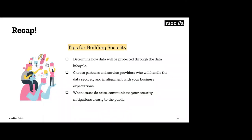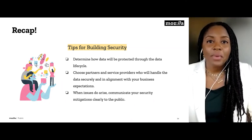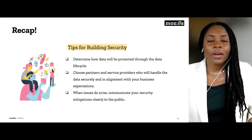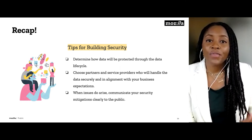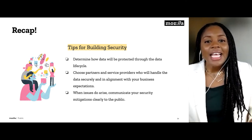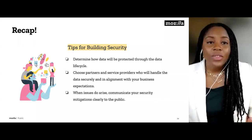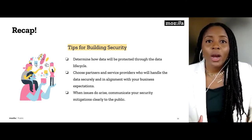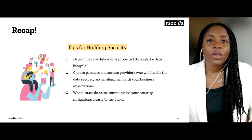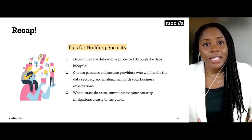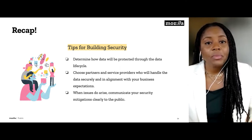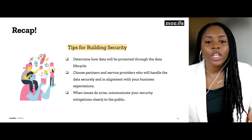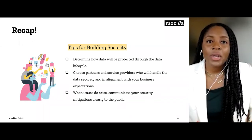Let's recap with some tips for building security. First, determine how your data will be protected throughout the data lifecycle — from the moment data is first collected up until deletion. Secondly, choose partners and service providers who will handle the data securely and in alignment with your business expectations. You could be the most privacy-centric, secure company in the world, but if you're partnering with organizations that don't share the same ethos around privacy and security, those companies can ultimately tarnish your brand. And lastly, when issues do arise, communicate those security mitigations clearly to the public — that builds trust through transparency.